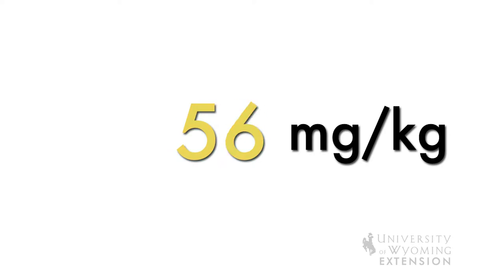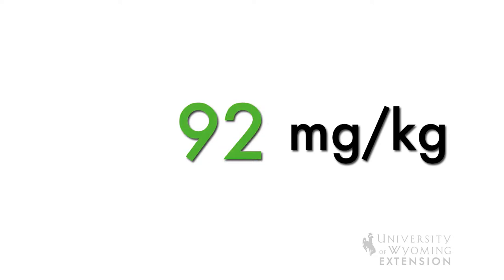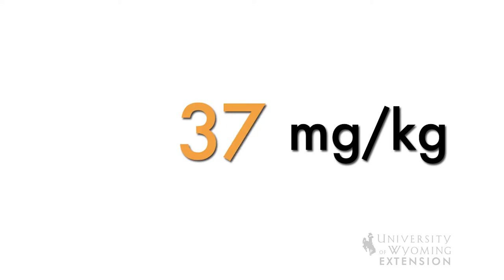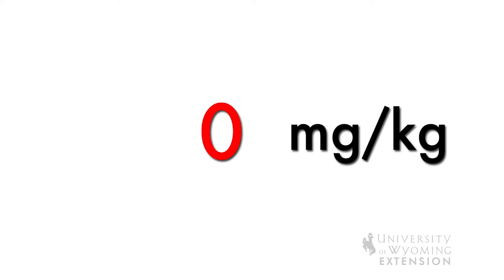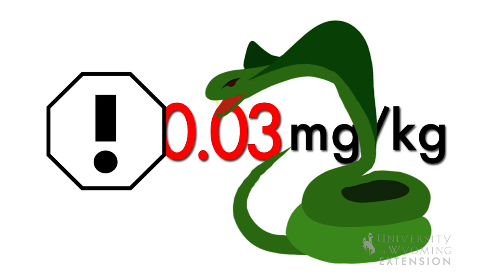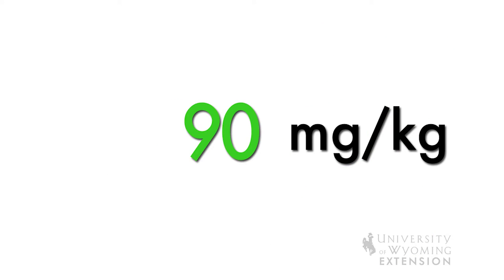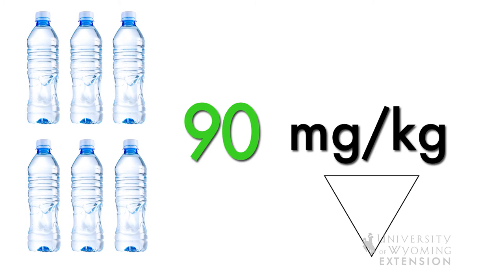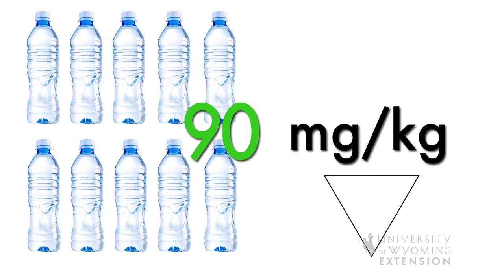The LD50 number is important because it helps explain the toxicity of each product. The lower the toxicity, the higher the LD50 number. The higher the toxicity, the lower the LD50 number. An LD50 with a very low number is actually really toxic, and therefore would be associated with a signal word such as danger poison. A higher LD50 number would be associated with a signal word such as caution or warning, meaning it is less toxic.